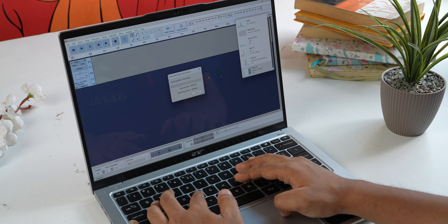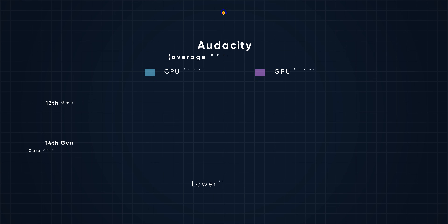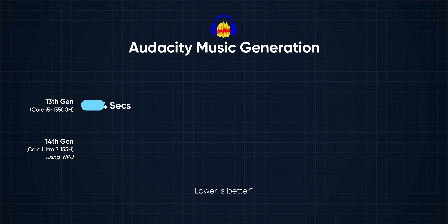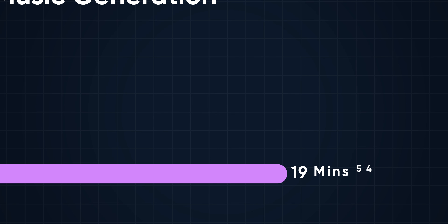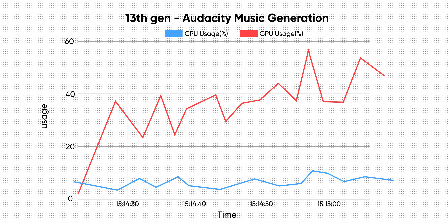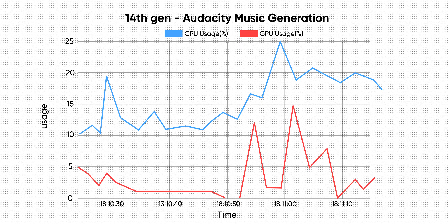I didn't have the same luck when trying to generate a 10-second beat on Audacity. The NPU on the latest Swift Core 14 did free up the GPU load by quite a bit as expected, but it was slow in generating the result — I can't say it was worth it at all. When I repeated the test without the NPU, both systems took the same amount of time with a different CPU and GPU usage pattern. This could be an optimization issue that I hope gets fixed with a future release of the music generation model.